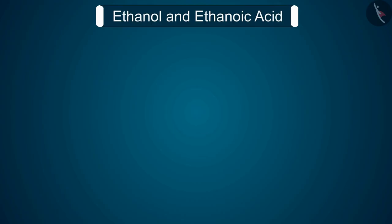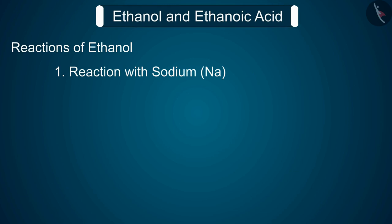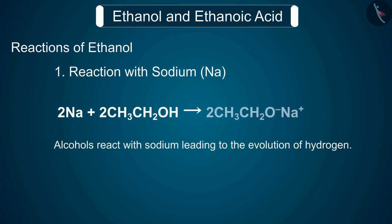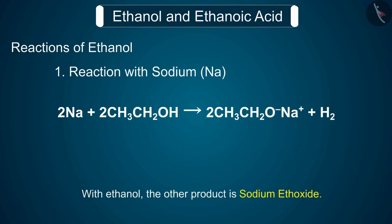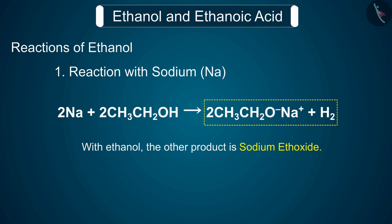We will now discuss the reactions of ethanol. Reaction 1: reaction with sodium. Any alcohols react with sodium, leading to the evolution of hydrogen. With ethanol, the other product is sodium ethoxide.